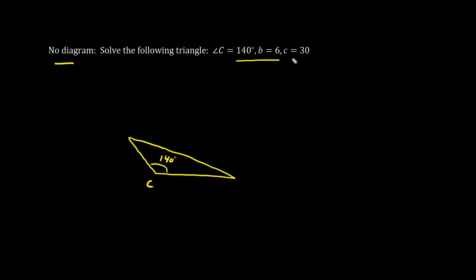We can see that the length c is quite large — 30. It's always opposite the angle, so this is c equals 30. And b is quite short, so let's label this as b equals 6. This here is capital B, this here is capital C, and this would be A.